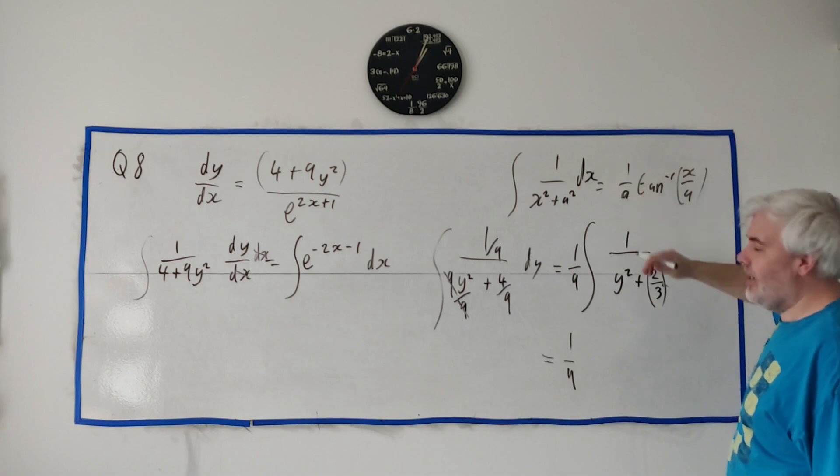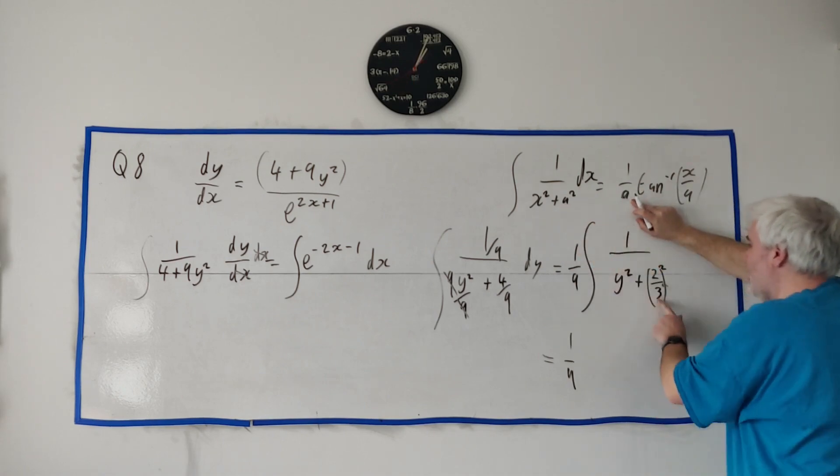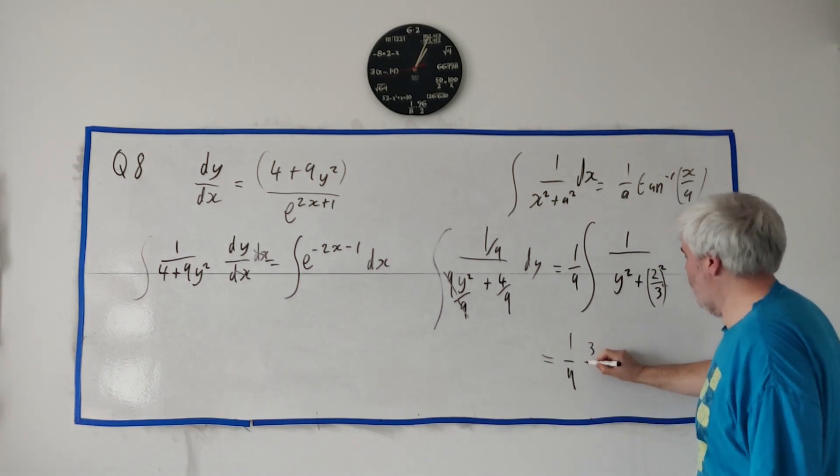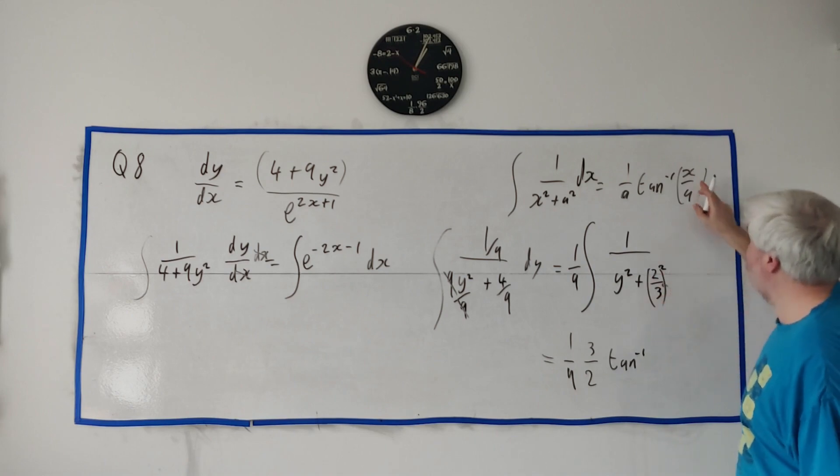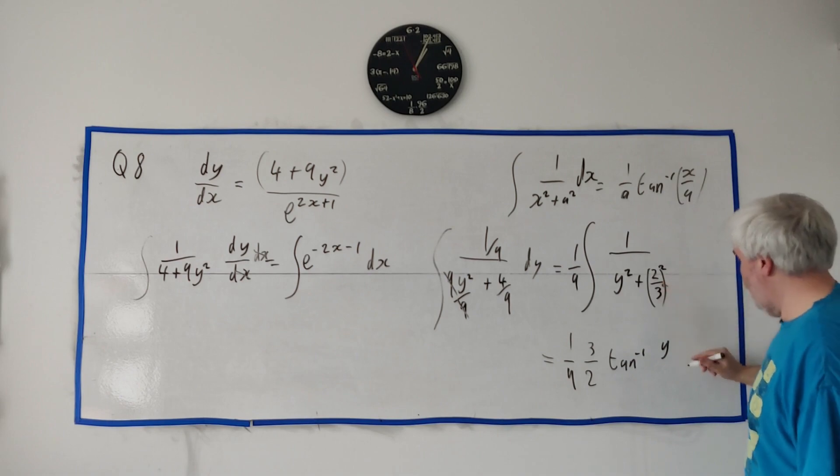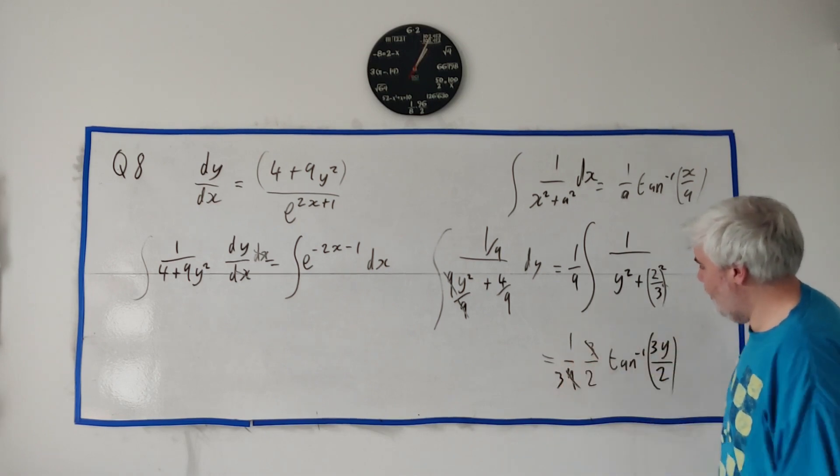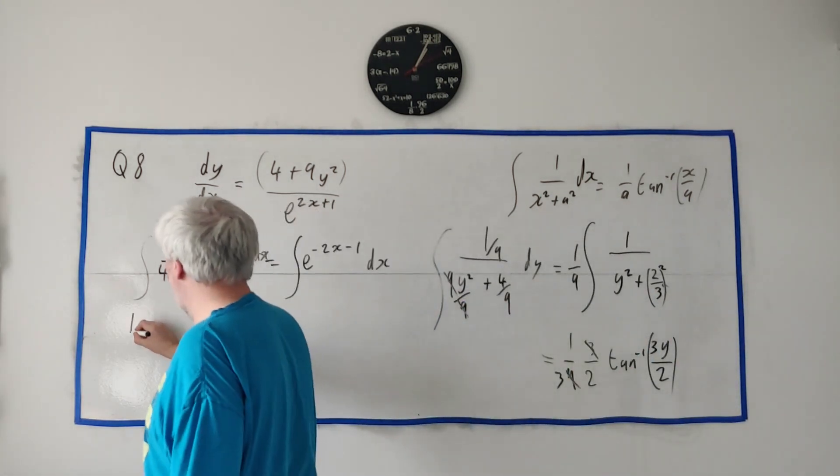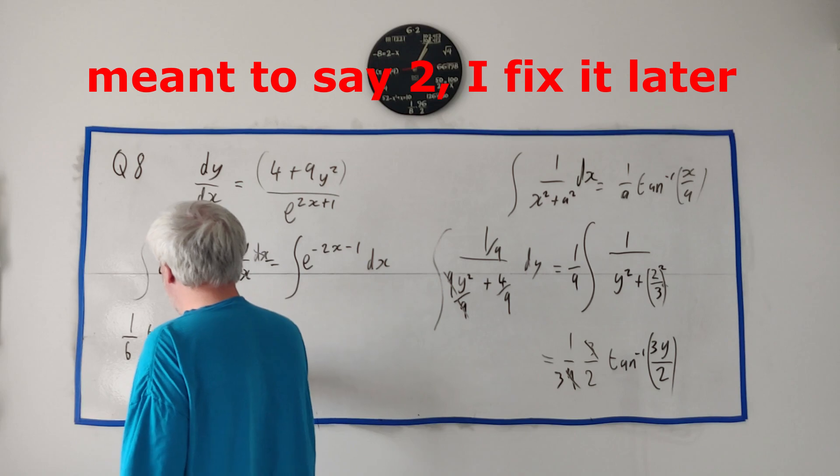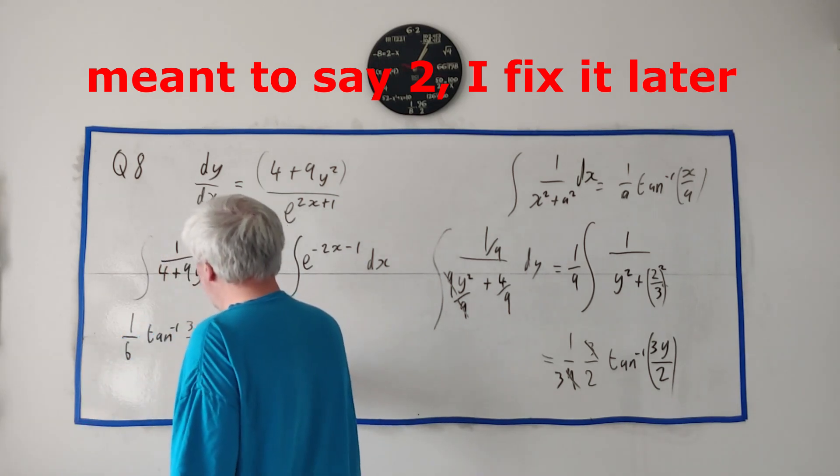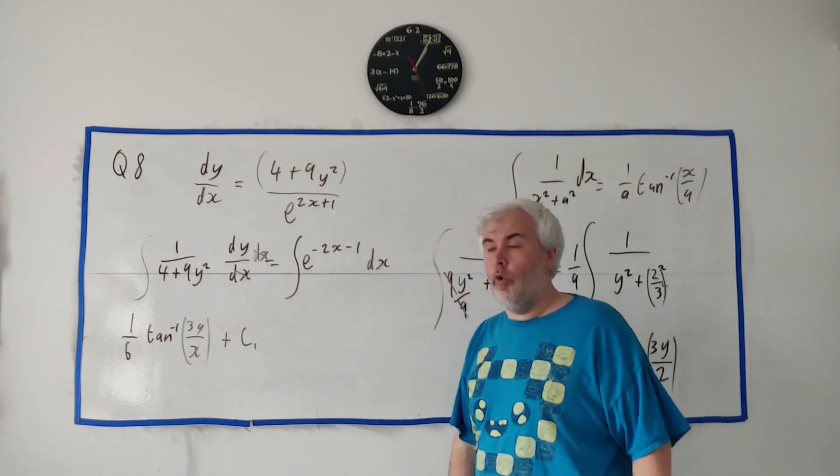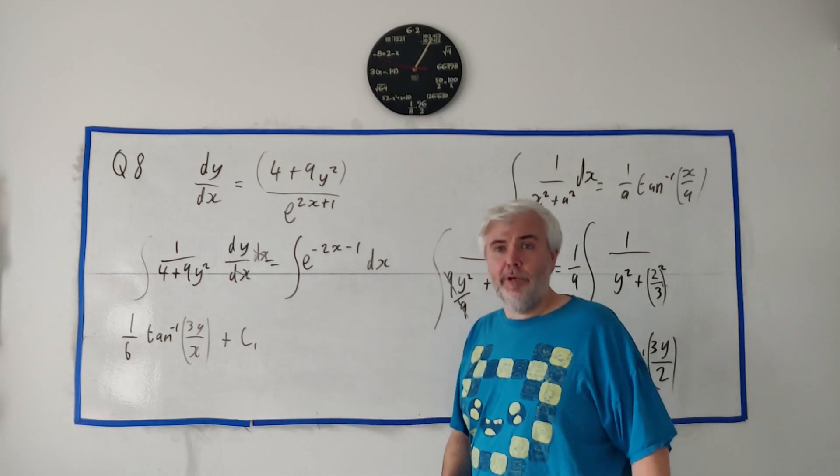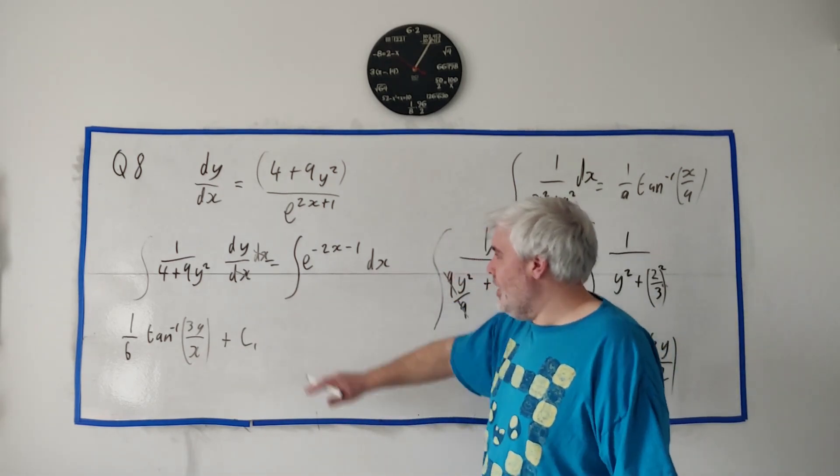Is equal to 1 over a. In this case, a is 2/3. 1 over 2/3 is 3/2. And multiplied by the inverse tangent of x, in this case is y, divided by 2/3. Dividing by 2/3 is 3/2. Let's see, the 3 cancels into the 9, 3 times, 3 times 2 is 6. The answer to this is 1/6 inverse tangent of 3y over 2. You'll lose a mark for this. You've got to remember, plus a constant. We're going to have another constant, so let's put constant 1 there. Okay, I'm not sure how many marks you would have got for that. I think you deserve probably 2, but you might have only got 1 unfortunately.